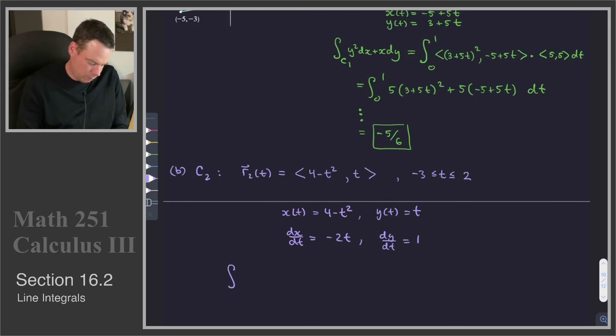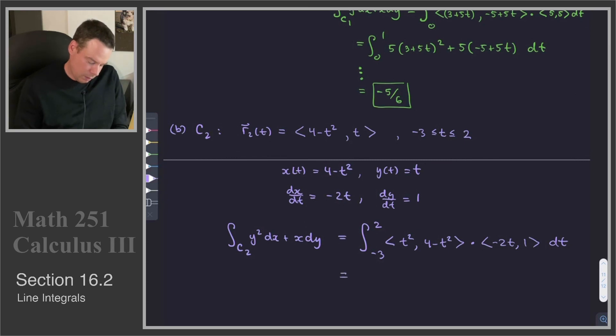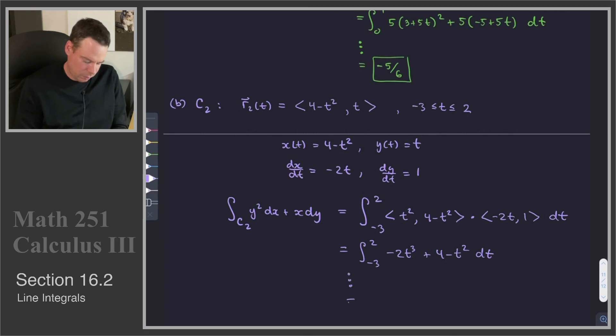We compute our integral over c₂ of y² dx + x dy. That's the integral from -3 to 2 of our vector field ⟨y², x⟩. So y² is t², x is 4 - t², dotted with ⟨dx/dt, dy/dt⟩ dt. There's the integral we need to calculate. Again, it's a dot product which gives us a polynomial: integral of -2t³ + 4 - t² dt. If we calculate this value out, we get 40 + 5/6.